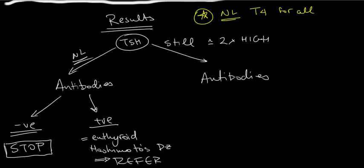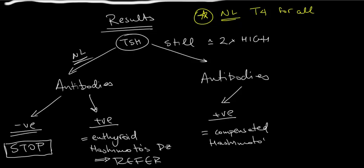If your TSH is still high and you get positive antibodies, then this is compensated hypothyroidism. The thyrohormone level is still okay, but the TSH is creeping up. The body's thyroid hormone production is going to soon fail. These patients need to be referred to endocrinology for them to be placed on treatment with levothyroxine.